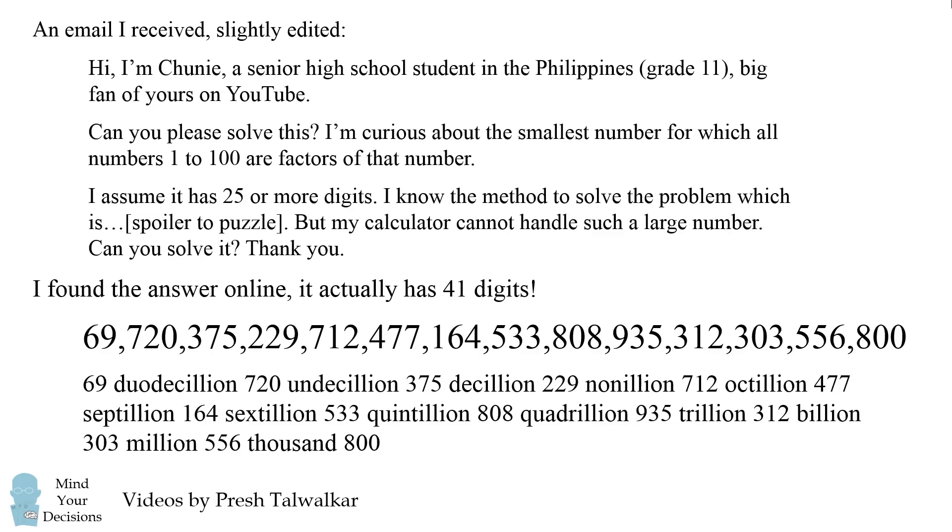69 duodecillion, 720 undecillion, 375 decillion, 229 nonillion, 712 octillion, 477 septillion, 164 sextillion, 533 quintillion, 808 quadrillion, 935 trillion, 312 billion, 303 million, 556 thousand, 800.